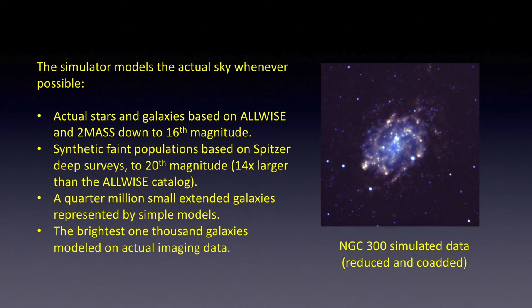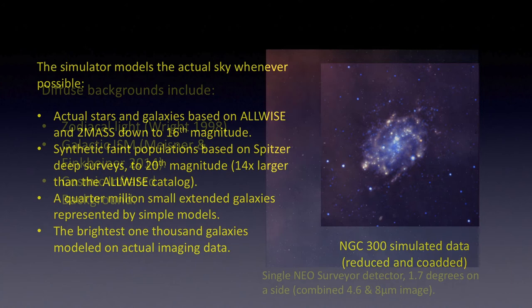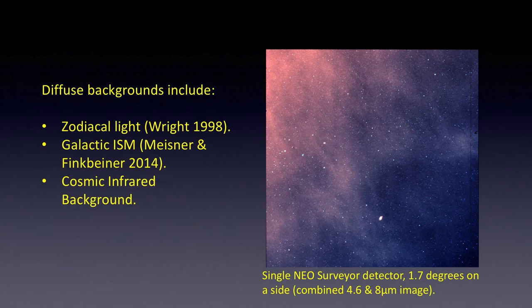The simulation of the sky contains real objects from all WISE whenever possible, and synthetic populations from WISE and Spitzer at fainter levels down to the confusion limit. The simulation also includes diffuse backgrounds from the CIB, the zodiacal light, and the diffuse ISM. These are critical for getting the noise levels right.